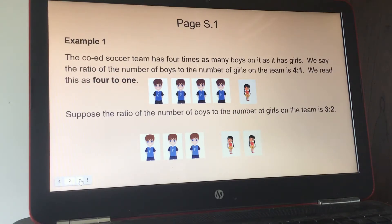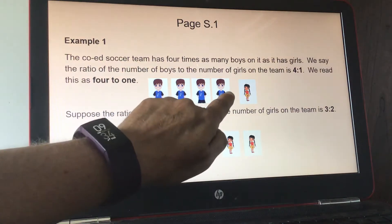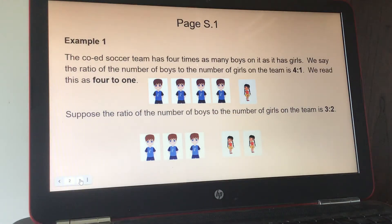Okay, so the first page, they show you an example. The co-ed soccer team has four times as many boys on it as girls. We say the ratio of the number of boys to the number of girls on the team is 4 to 1. So we read that this is 4 to 1.